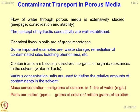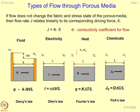Another way of defining this is parts per million (PPM), or if you change it, parts per trillion (PPT) or parts per billion (PPB). Essentially, PPM is grams of solution divided by million grams of solution. Now, the types of flow through porous media can be described by the assumption that if flow does not change the fabric and stress state of the porous media, then the flow rate J relates linearly to its corresponding driving force. In this generalized form, J is the flow rate, phi is the flux, and x is the driving force.